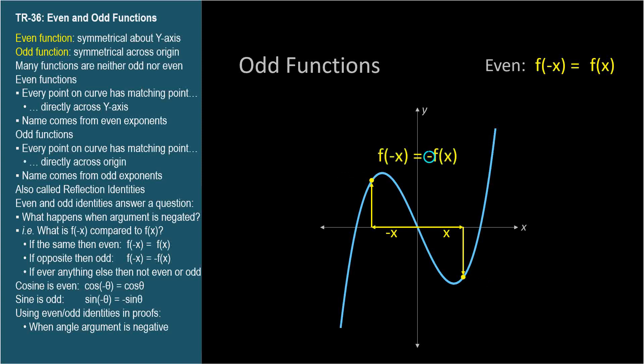For odd functions, f of negative x equals negative f of x. The value on one side of the y-axis is always the opposite of the value on the other side for odd functions.